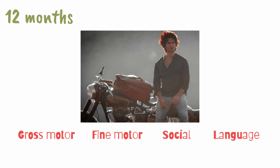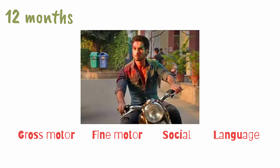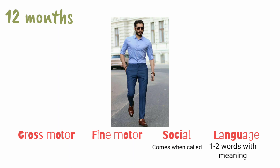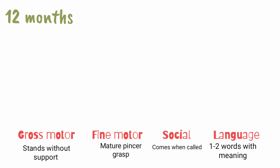For 12 months, remember a story of a boy who finally gets a decent job but has not returned home in 12 months. His parents miss him, so they call him home. When he comes back he brings one to two gifts for each family member. He is no more a boy but a matured person according to family members, and they represent that he stands without support. Key points: under gross motor — stands without support; under fine motor — mature pincer grasp; under social — comes when called; under language — one to two words with meaning.